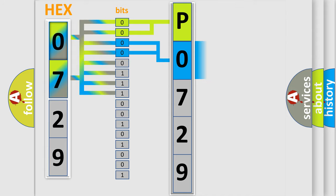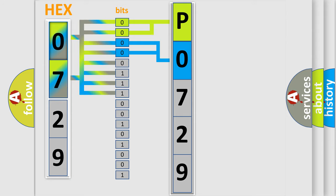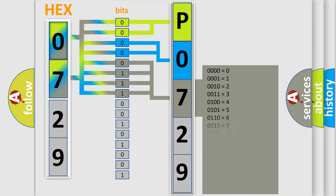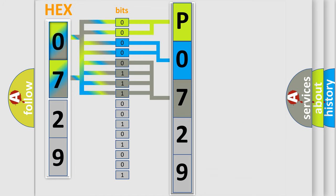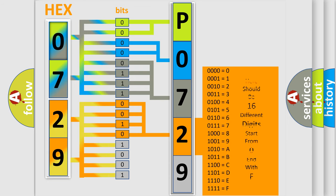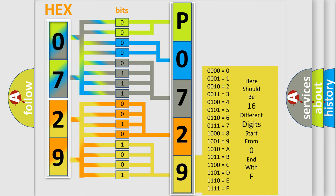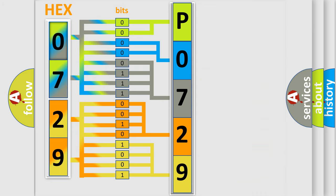The next two bits again determine the second character. The last bit styles of the first byte define the third character of the code. The second byte is composed of a combination of eight bits. The first four bits determine the fourth character of the code, and the combination of the last four bits defines the fifth character. A single byte conceals 256 possible combinations.